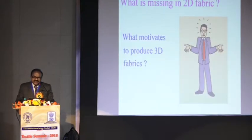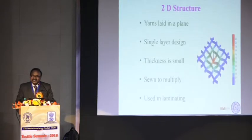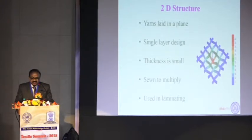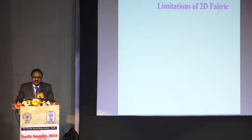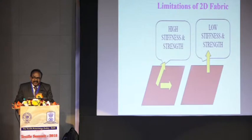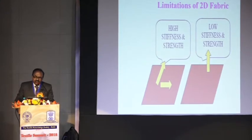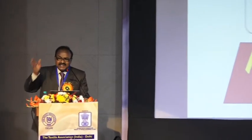The first question is: what is missing in 2D? Why are we interested in 3D? If you look at a 2D structure, it is a very thin fabric because the thickness is simply the sum total of the diameter of two yarns. If you want a thick fabric, the only alternative is stitching, multi-layer fabric, or using an adhesive to laminate. That is the main drawback. The other drawback is if you try to measure the properties, they are good only in warp and weft direction. Properties in the thickness direction — the Z plane — are completely missing. There are applications where we need mechanical properties also in the Z axis.